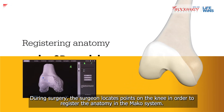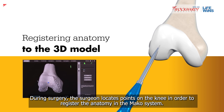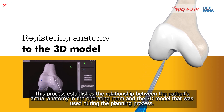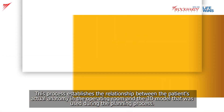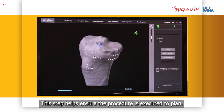During surgery, the surgeon locates points on the knee in order to register the anatomy in the Mako system. This process establishes the relationship between the patient's actual anatomy in the operating room and the 3D model that was used during the planning process. This step helps ensure the procedure is executed to plan.